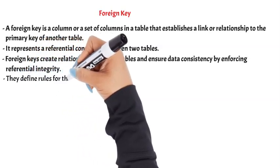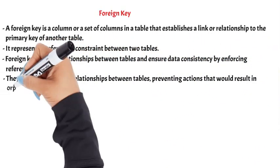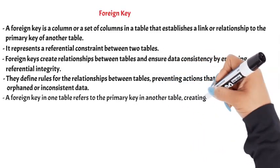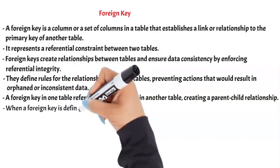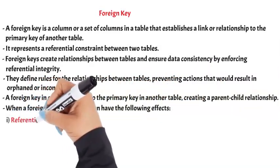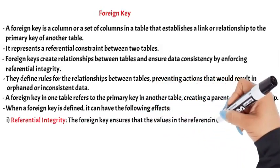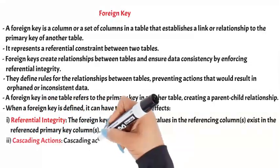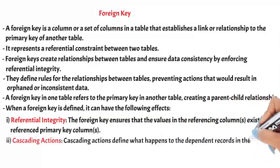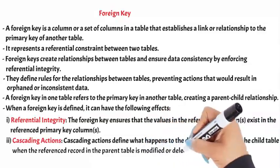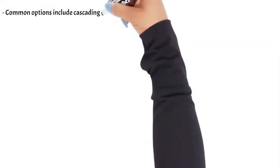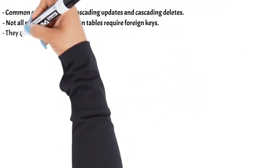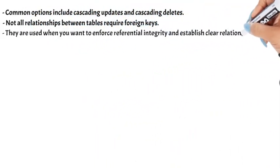They define rules for the relationships between tables, preventing actions that would result in orphaned or inconsistent data. A foreign key in one table refers to the primary key in another table, creating a parent-child relationship. When a foreign key is defined, it can have the following effects. Referential integrity. The foreign key ensures that the values in the referencing columns exist in the referenced primary key columns. Cascading actions. Cascading actions define what happens to the dependent records in the child table when the referenced record in the parent table is modified or deleted. Common options include cascading updates and cascading deletes. Not all relationships between tables require foreign keys. They are used when you want to enforce referential integrity and establish clear relationships between tables.